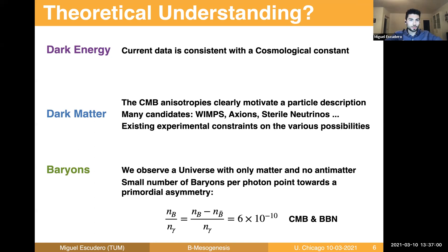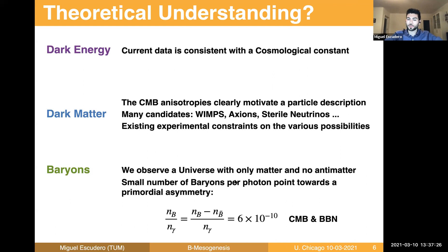Finally, we have baryons. At least this component of the universe we know what it is — they are protons and neutrons. The only problem is that we don't understand why they are there. We observe a universe with only matter and no antimatter, and that's fascinating because from experiment we see that matter and antimatter appear to interact in almost the same way. The small number of baryons per photon points toward a very small primordial asymmetry in the early universe at the level of 10 to the minus 9 between the number of baryons and antibaryons in the early universe.